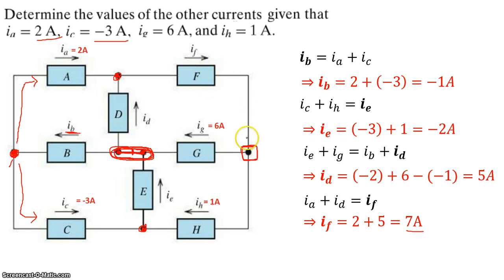So the current coming in, IF, is 7 amps. The current leaving that node, IG plus IH, 6 plus 1, is also 7 amps, which verifies that our calculations done earlier are actually correct. So you can use extra nodes that might remain in a circuit to look back and check your answers.